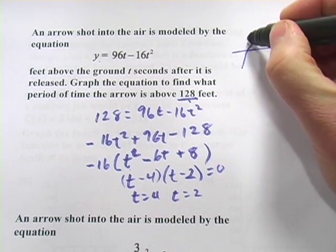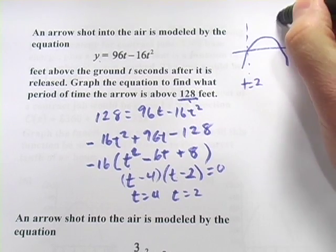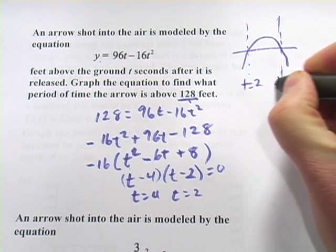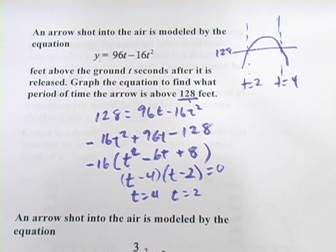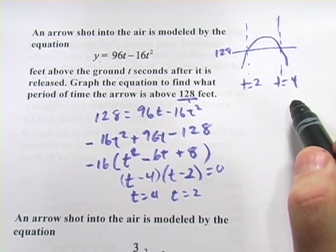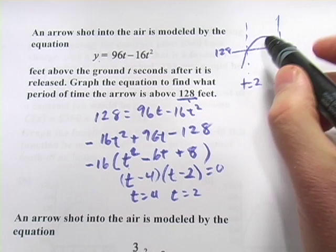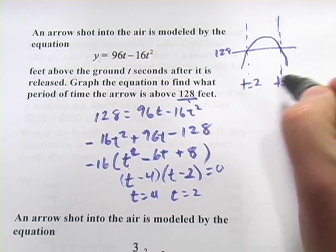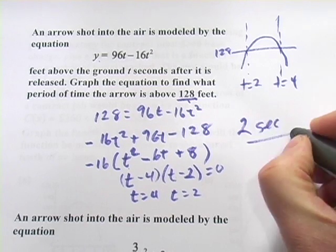So to go back to our graph, this point right here is t equals 2. And this point right here is t equals 4. This line represents 128 feet above the ground. So there's our graph. And what we wanted to find is the period of time it's above 128 feet. Well, that's from here to here, from 2 to 4 seconds. So that period of time is 2 seconds long.